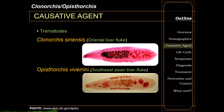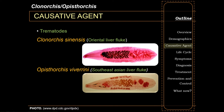If you take a look at their morphology — discounting the coloring and shading — you'll notice that these two look very much the same, aside from their size difference. So morphologically, how do you think you can distinguish a Clonorchis from an Opisthorchis adult?